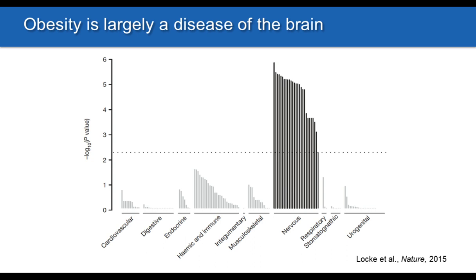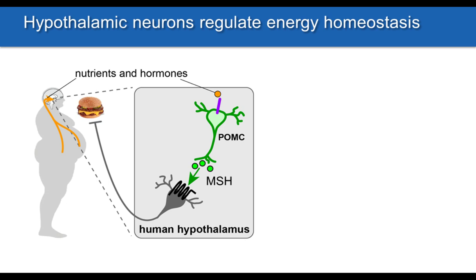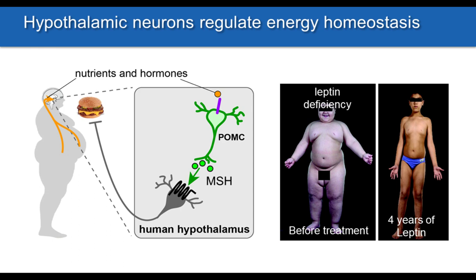My interest is obesity, and genetic studies have very clearly shown that the genetic variants associated with obesity are highly enriched in the brain. Obesity is really thought of as a disease of the brain, and there are particular regions that play a central role in regulating appetite and energy expenditure. One of those brain regions is the hypothalamus. Within the hypothalamus, there are a few cell populations, for example the pro-opiomelanocortin or POMC neurons, that release a neuropeptide known as melanocyte stimulating hormone or MSH. This peptide plays a potent role in regulating appetite because it binds a receptor on downstream neurons that regulate food intake and energy expenditure. The activity of these POMC neurons is in turn regulated by nutrients and hormones such as leptin, which is produced by fat cells.